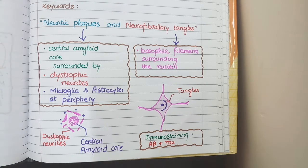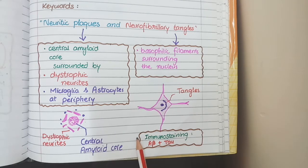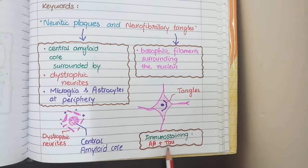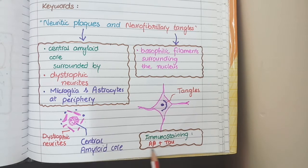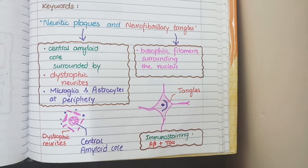Lastly, an additional point is that in cases of Alzheimer's disease, there is positive immunohistochemical staining for two proteins: amyloid beta protein and tau protein. Amyloid beta protein was present in neuritic plaques and tau protein was present in neurofibrillary tangles, so the immunohistochemical staining for these two proteins will be positive.